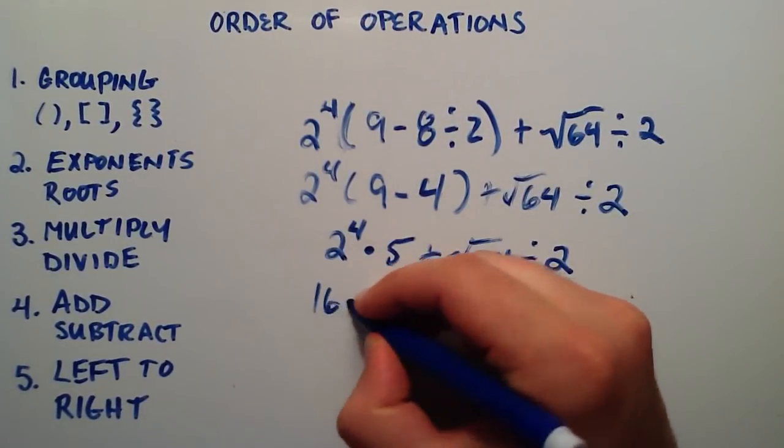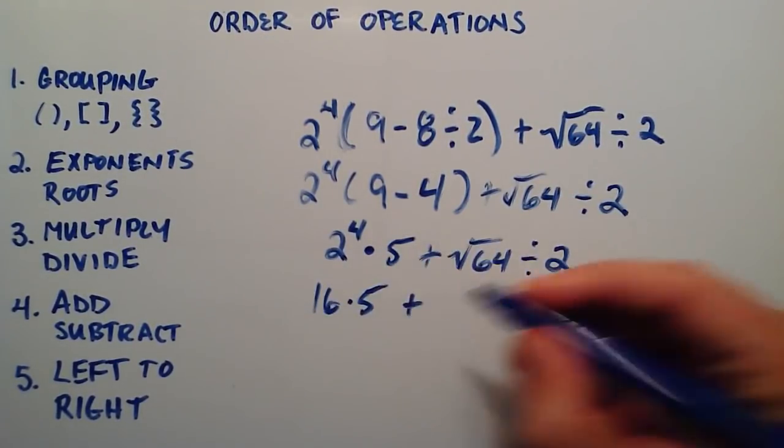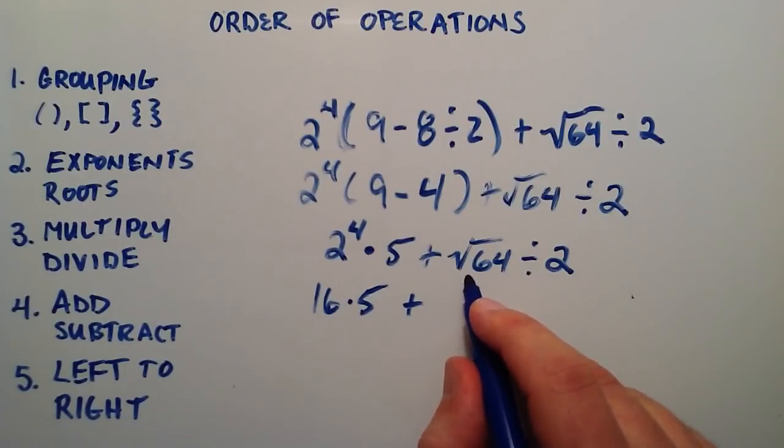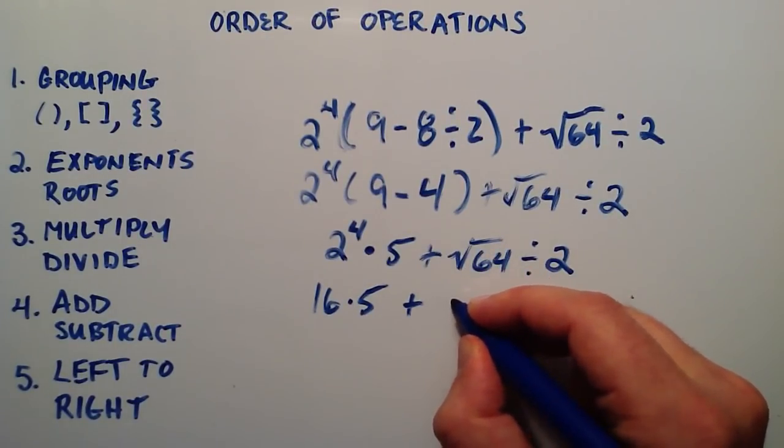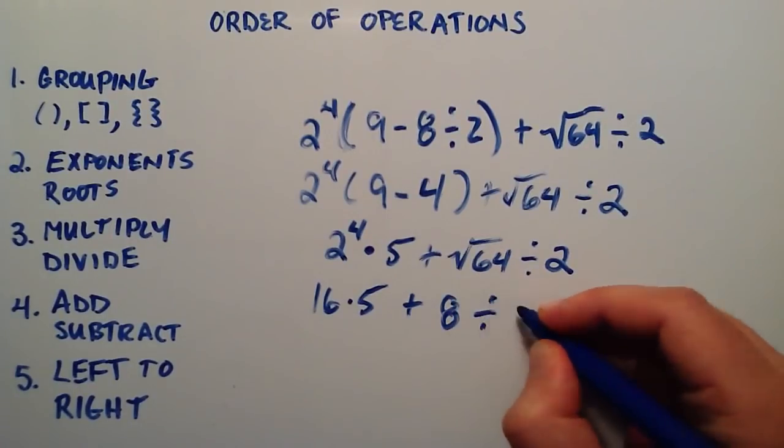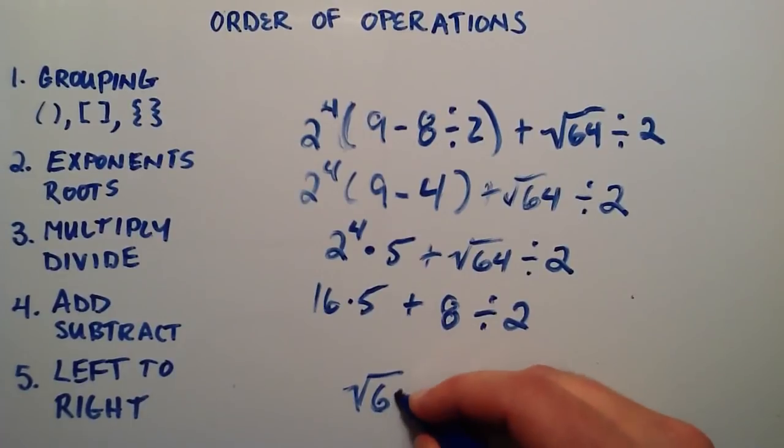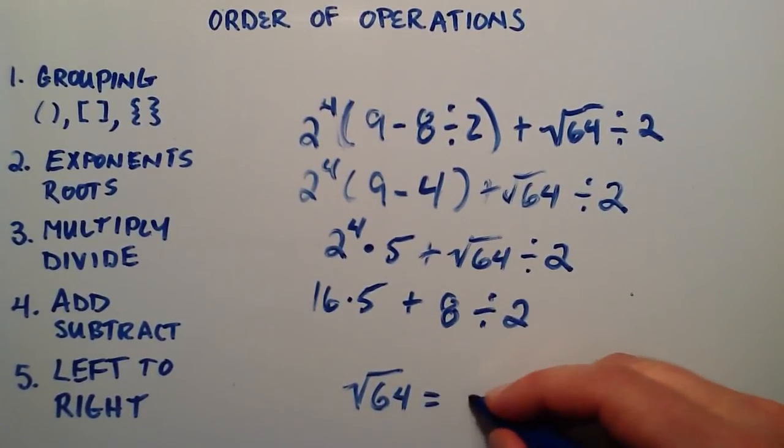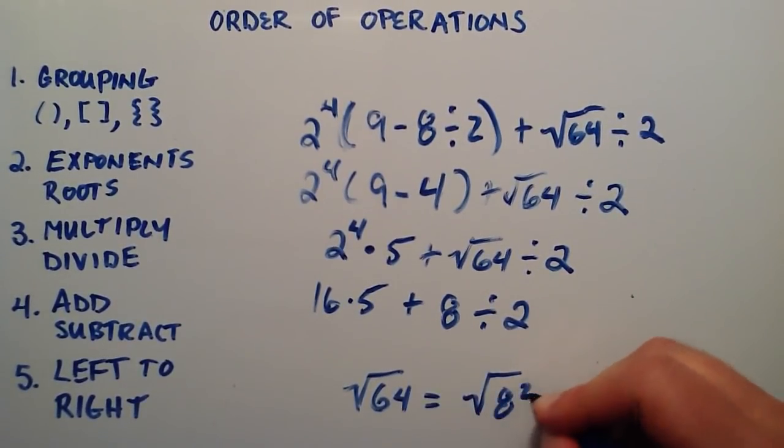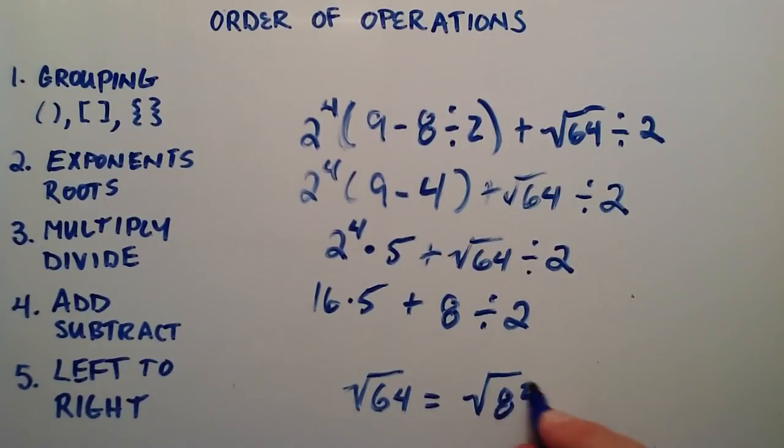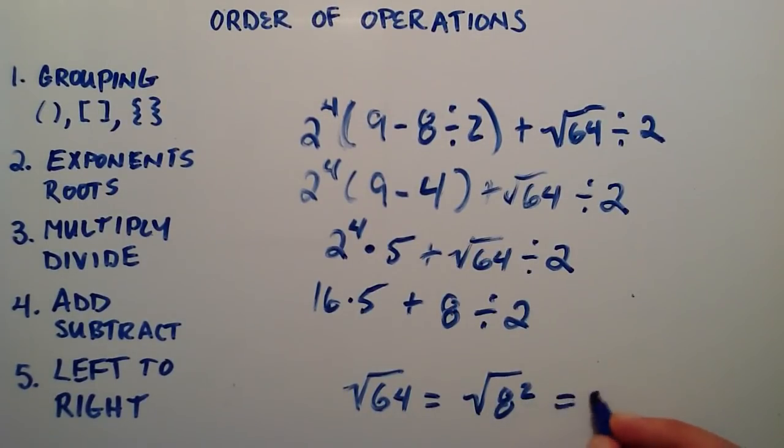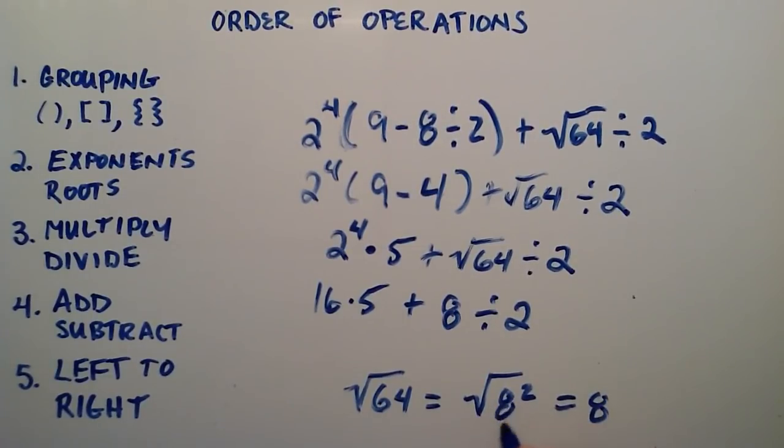So then we have 16 times 5, plus, now we get to our root, square root of 64, 64 is equal to 8, divided by 2. And the square root of 64, the reason why that's equal to 8, is because 64 is equal to 8 squared. And when you have something squared underneath the square root, the square root and the square cancel, giving you the base right here.